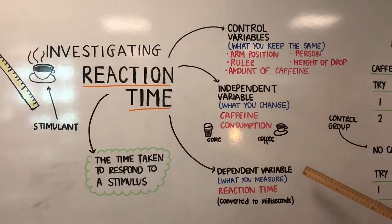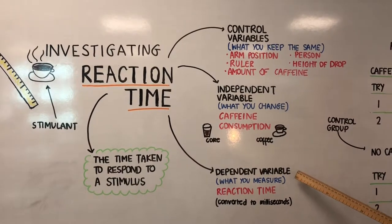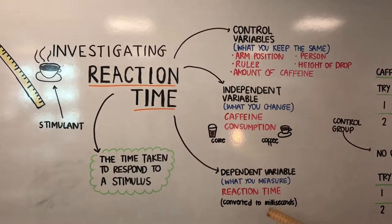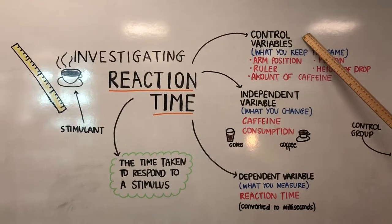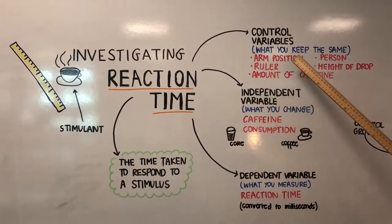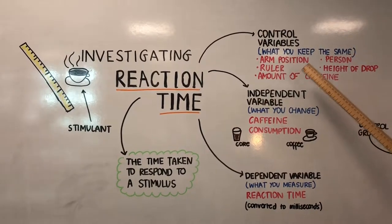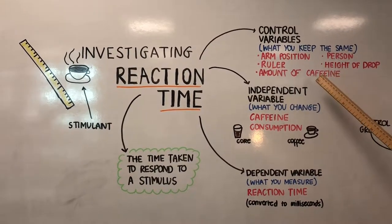Our dependent variable is what we're going to measure, and it's going to be the reaction time, which we will convert to milliseconds in a table later on. Our control variables are what we're going to keep the same, so that's going to be your arm position, the person who is receiving the ruler, the height of the drop, and the amount of caffeine.